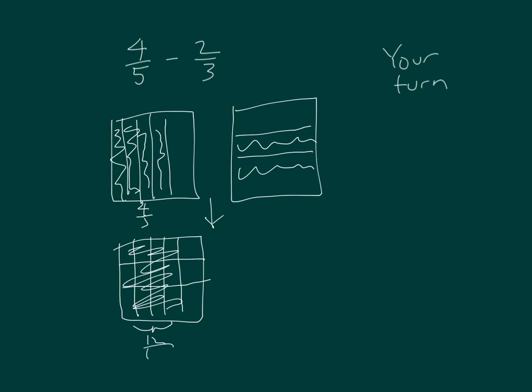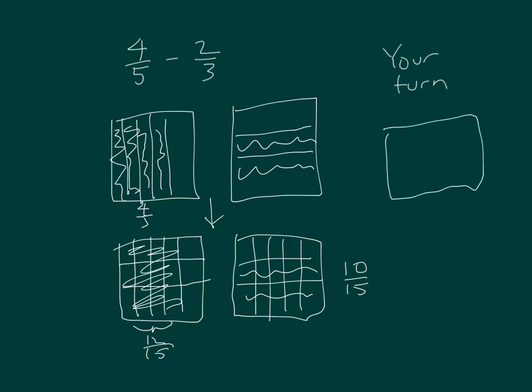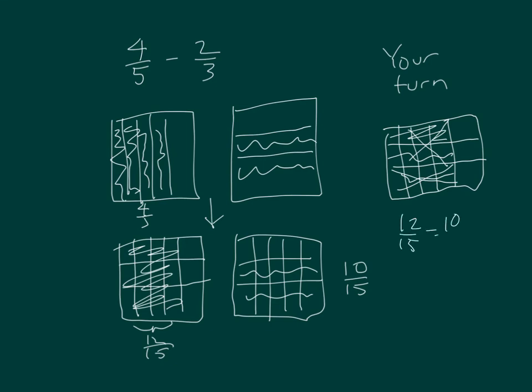For 2 thirds, we got into 10 fifteenths. So I have 12 fifteenths minus 10 fifteenths. There's 10 of them that are crossed out. So what's left is 2 that were shaded out of the 15. So it was 12 fifteenths minus 10 fifteenths equaling 2 fifteenths as our answer.